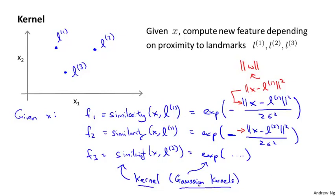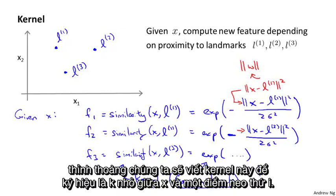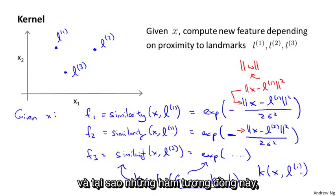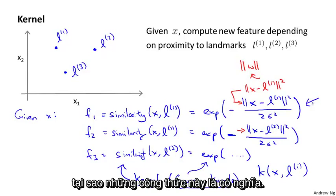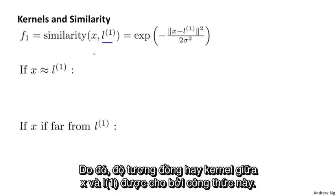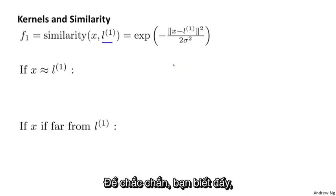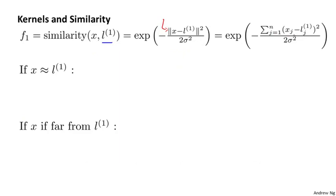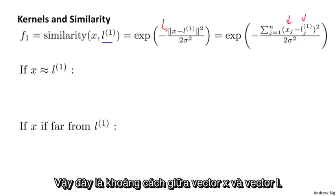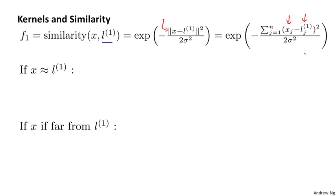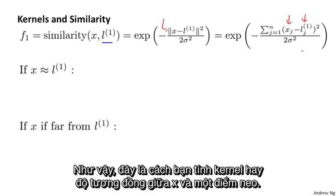Instead of writing 'similarity between x and l,' sometimes we'll also write this as a kernel denoted lowercase k between x and one of my landmarks l i. The numerator of the kernel can also be written as a sum from j equals one through n of the component-wise squared distance between vector x and vector l. For these slides I'm ignoring x zero — the intercept term, which is always equal to one. This is how you compute the kernel or the similarity between x and a landmark.